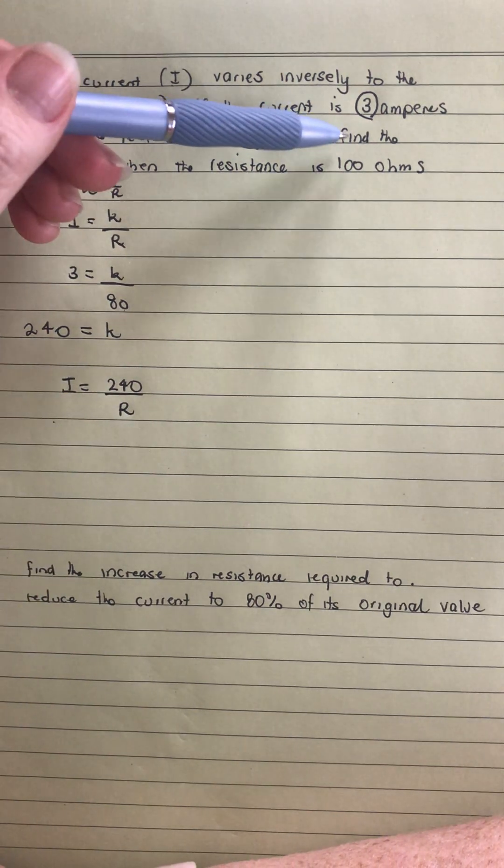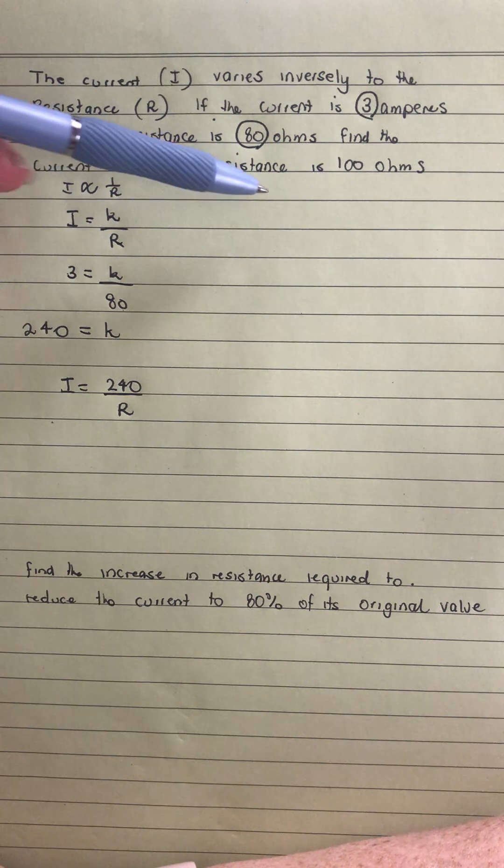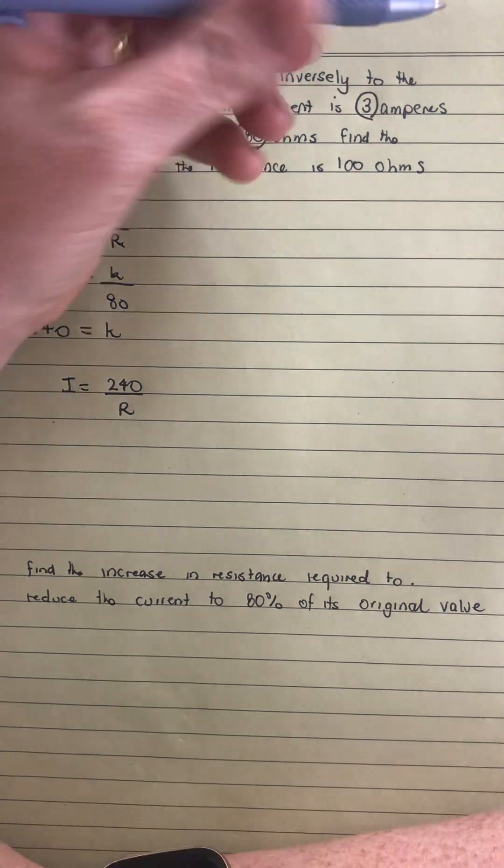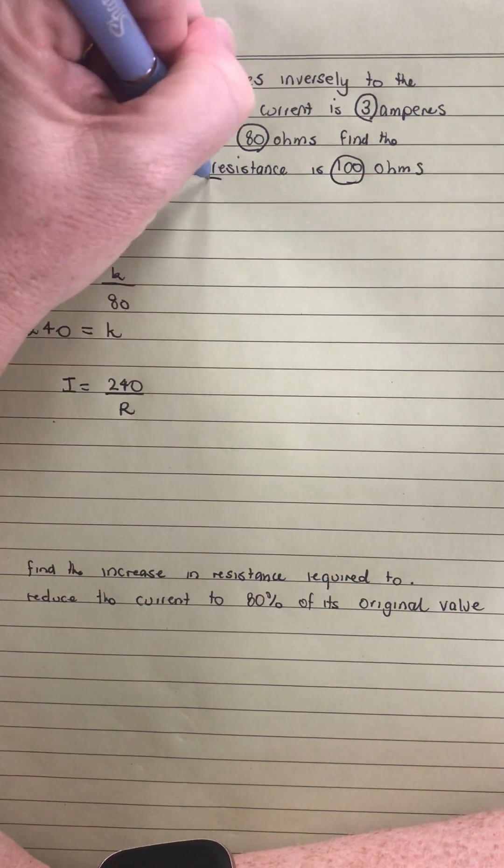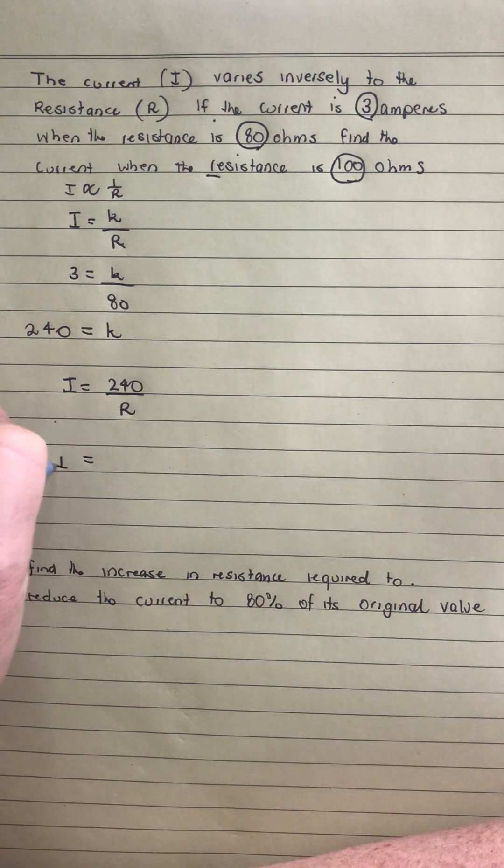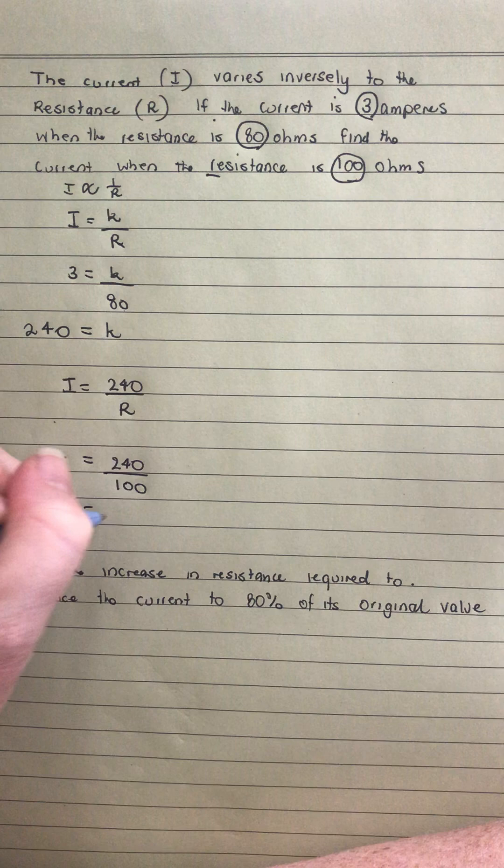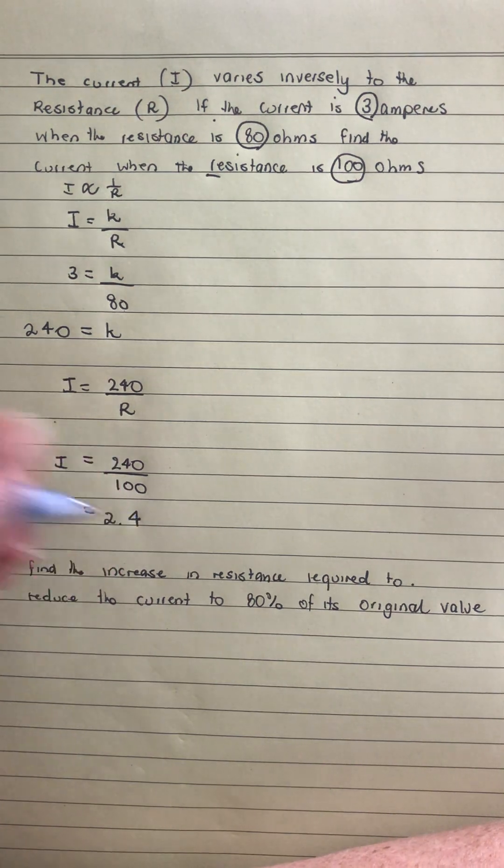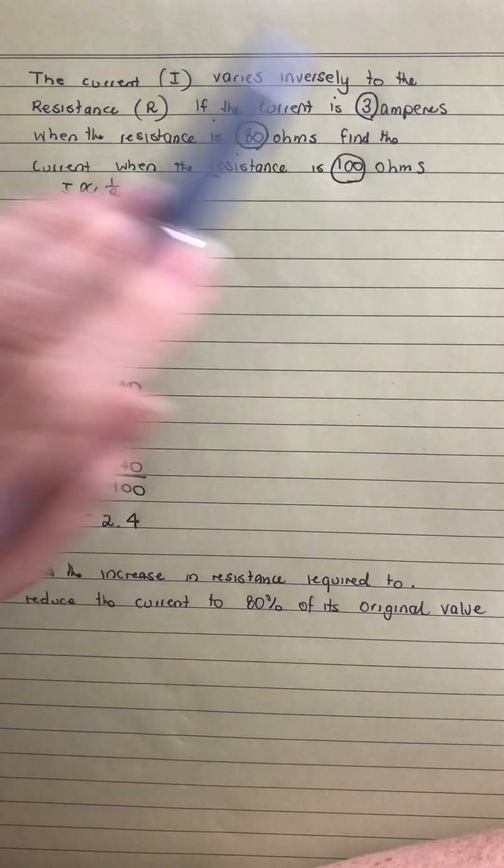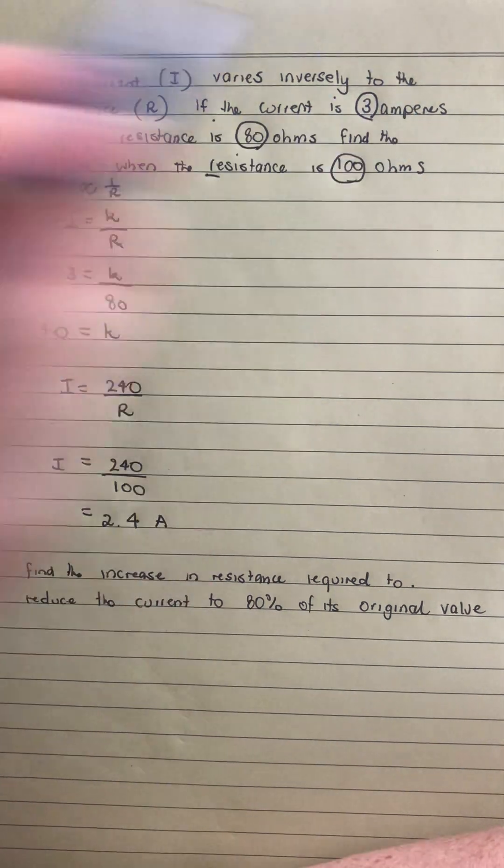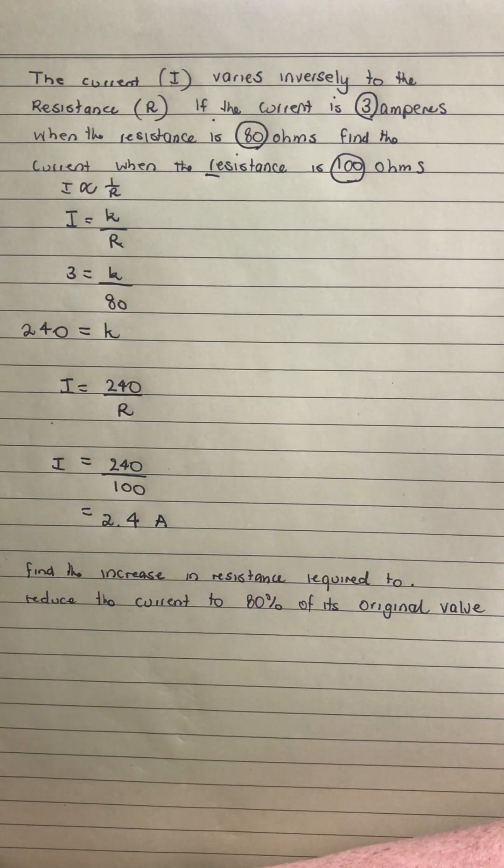The second part of that question was to find the current when the resistance is 100 ohms. The 100 was what we put with our resistance. So we're going to go, i is equal to 240 over 100, which is going to be 2.4. We should put next to there the amperes, because we've been told that was the unit up the top.